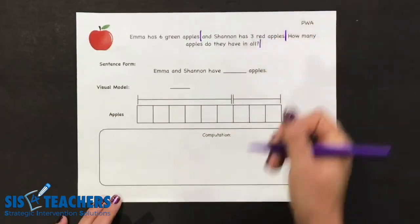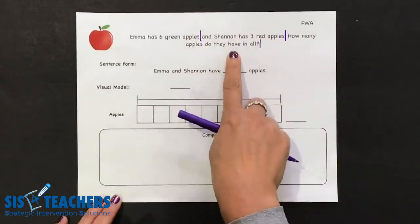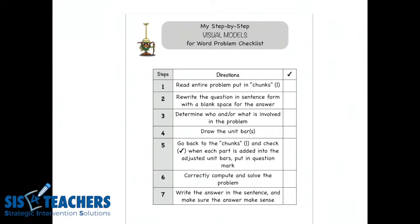For this story problem, how many chunks do we have? We have one section, two, and then three. Let's go over to our checklist to mark off that first step that we already put the chunks into the problem.